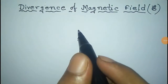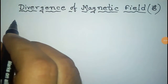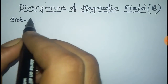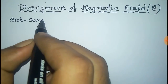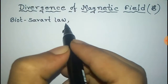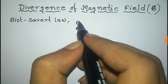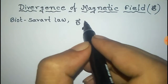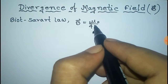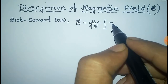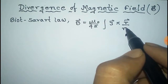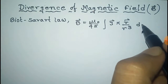We have to find the divergence of the magnetic field. For this, we use the Biot-Savart law. According to this law, the magnetic field B is equal to mu0 by 4 pi, integration of j vector cross r vector by r cube into dV.